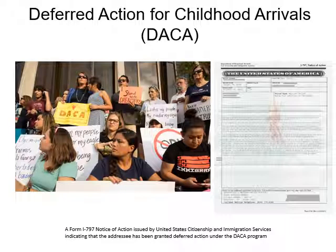Another interesting executive order was Deferred Action for Childhood Arrivals, better known as DACA. This was an executive branch memorandum announced by President Barack Obama on June 15, 2012. It created a new immigration policy allowing some individuals with unlawful presence in the United States after being brought to the country as children to receive a renewable two-year period of deferred action from deportation and become eligible for an employment authorization document or work permit. Recipients cannot have felonies or serious misdemeanors on their records. DACA does not provide a path to citizenship.